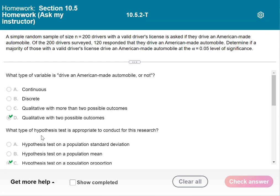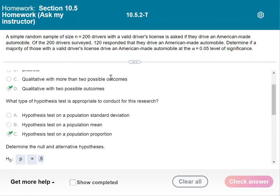What type of hypothesis test is appropriate to conduct for this research? So this is considered a characteristic. Those that either drive American-made automobiles or not. And so we're going to use the population proportion hypothesis test. The only other option we have is population mean because those are the only two we did.